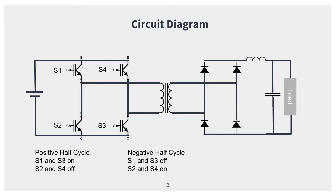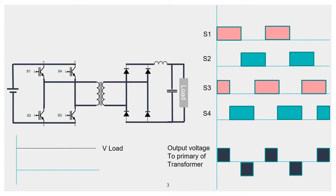Consider the first DC-to-AC converter, and consider the pink and blue blocks to be the gating pulses of the switches — for that time interval the switches are on. When S1 and S3 are on and S2 and S4 are off, you have the first output to the primary transformer. When S2 and S4 are on and S1 and S3 are off, you have the negative half cycle. There's a small overlap region between these two cycles where S1 and S4 are both on, which creates a short circuit, so there's no voltage to the primary of the transformer and you get zero output voltage.